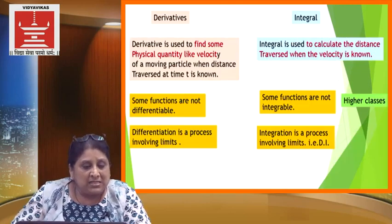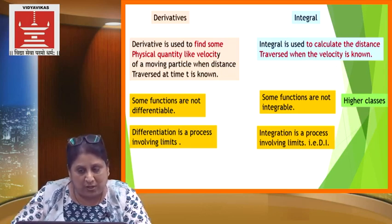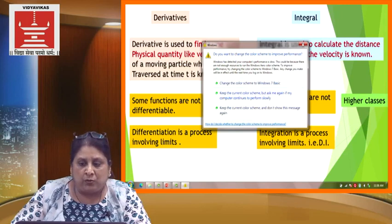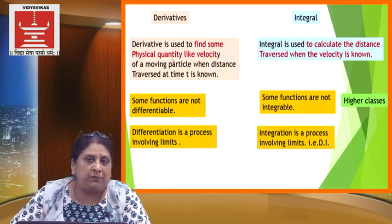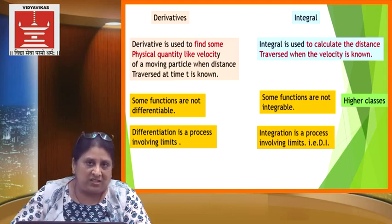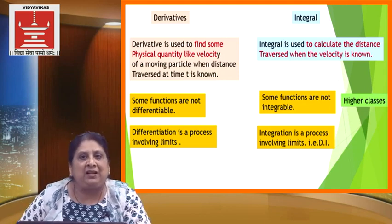Another comparison point: the derivative is used to find some physical quantity like velocity of a moving particle when the distance traversed at time t is known. Because velocity is nothing but the derivative of displacement with respect to time — that is, v equals ds by dt. This is the formula used to find the velocity if the displacement at particular time t is given. Whereas integral is used to calculate the distance traversed when the velocity is known; if you integrate the velocity function, you will get the displacement required.